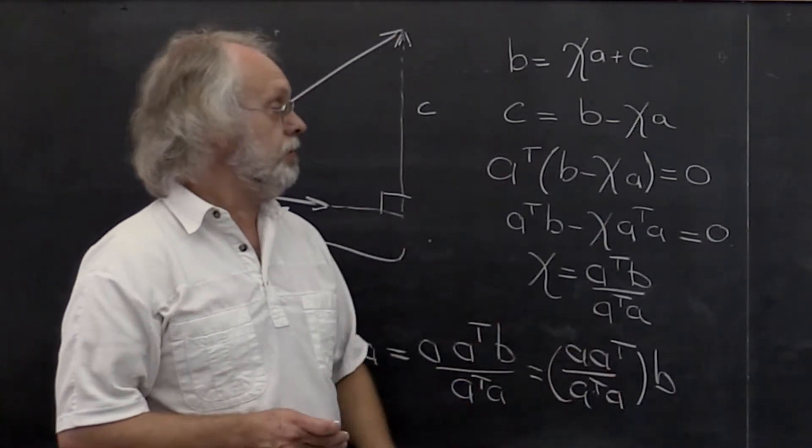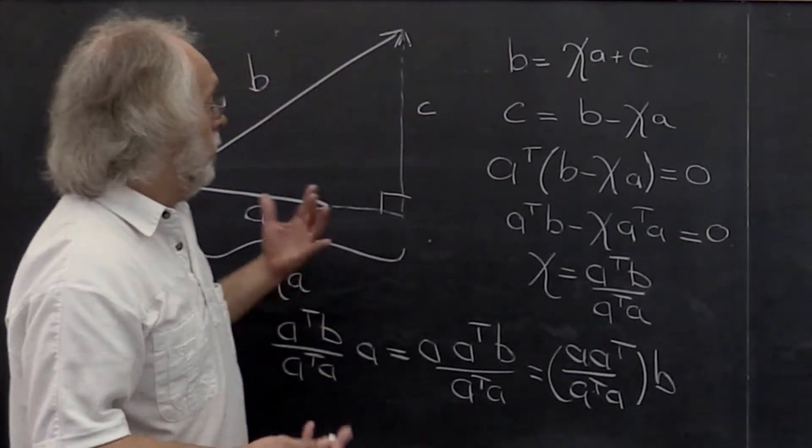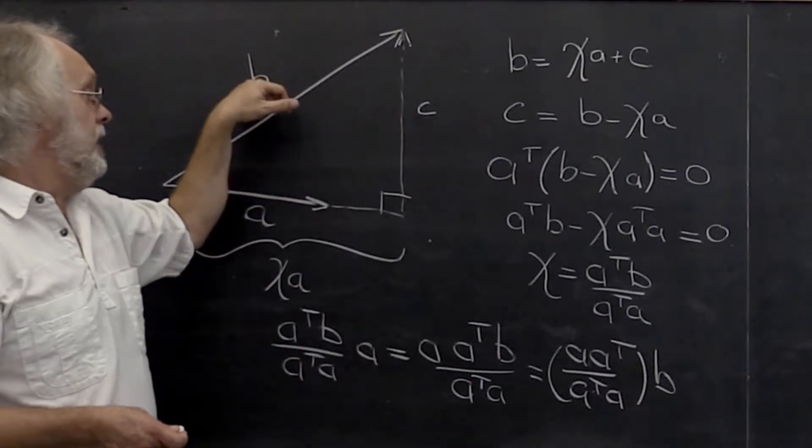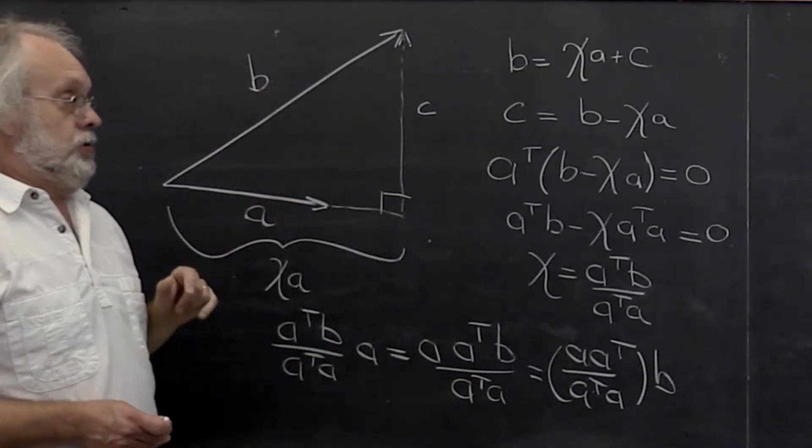So this is a projection vector. Now we can ask ourselves, what's the component of B orthogonal to A?